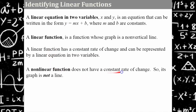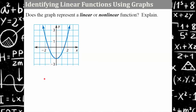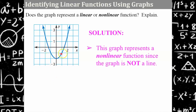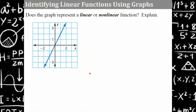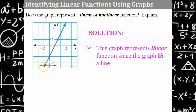A non-linear function does not have a constant rate of change and its graph is not a line. I'd like you to determine whether or not this graph is linear or non-linear and be able to explain your answer. Please pause and come back and check your answer. Welcome back — this is a non-linear function because the graph is not a line. It would pass the vertical line test, but it's not a line, so it's not a linear function. Try this one — welcome back, this is a linear function; it is the graph of a line.